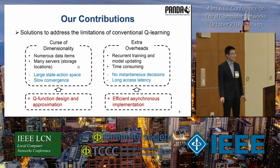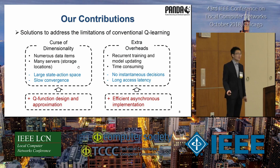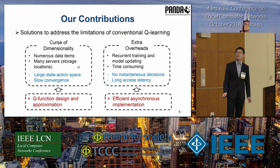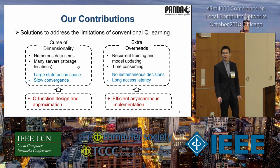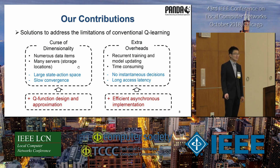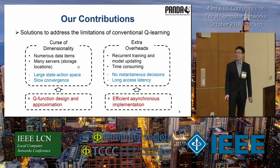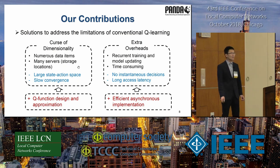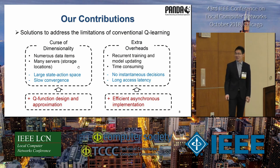However, conventional Q-learning has two limitations. First, due to numerous data items and many deployed servers, it may suffer the curse of dimensionality and slow convergence with the increasing scale of the state-action space. Our solution is proper Q-function design and approximation with a neural network. Second, the traditional workflow of reinforcement learning requires updating the model after each decision. This recurrent training process will introduce extra delays to data requests, which is undesirable for data center applications. This issue can be addressed efficiently by our asynchronous implementation.